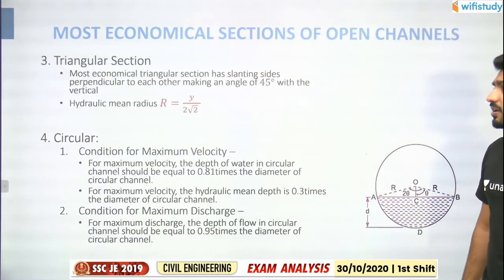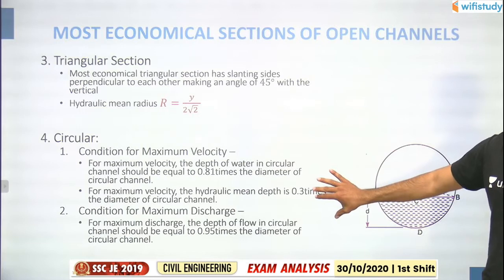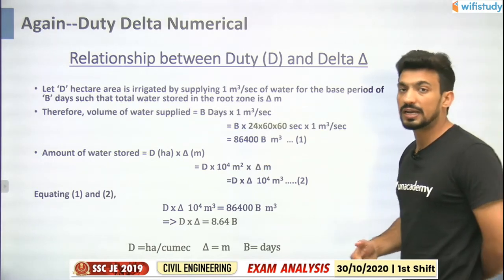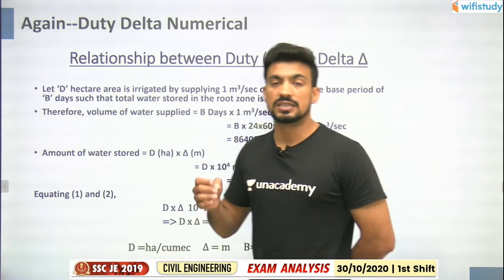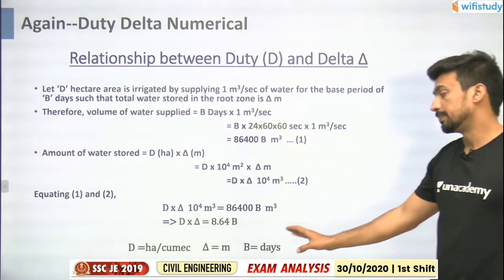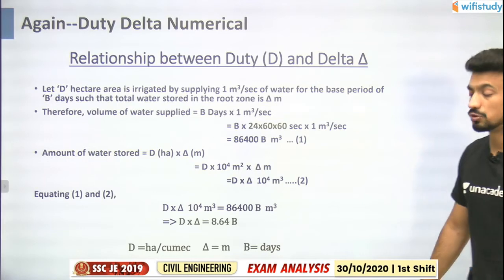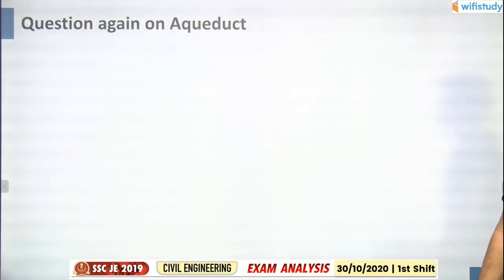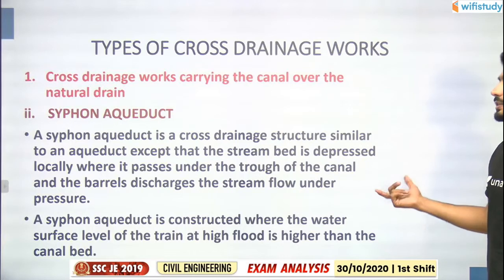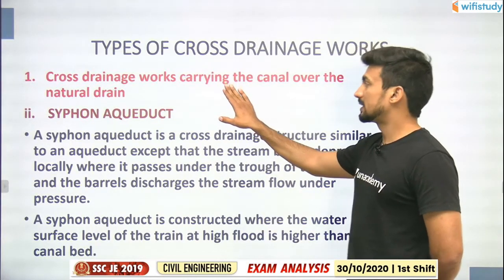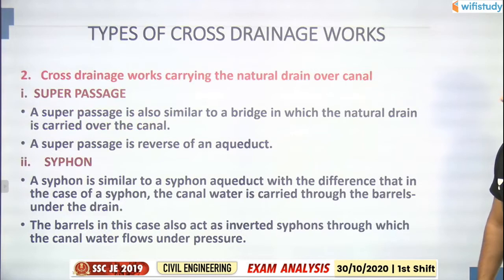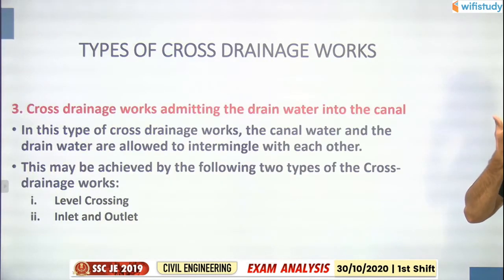Most economical section for open channel flow - read conditions for triangular and circular sections. Before the next shift: numerical on duty-delta appeared again, and aqueduct numerical appeared again. For aqueduct, canal goes over a natural drain. In siphon aqueduct, canal also goes over but the canal track is depressed. For super passage, natural drain goes over the canal.